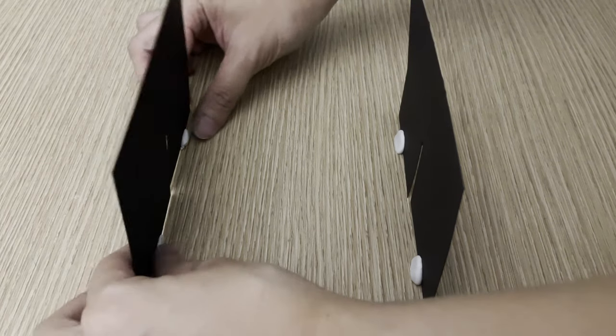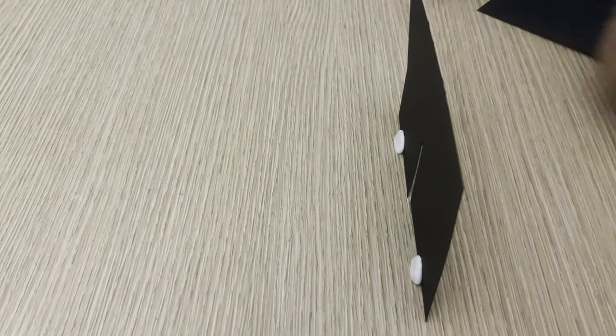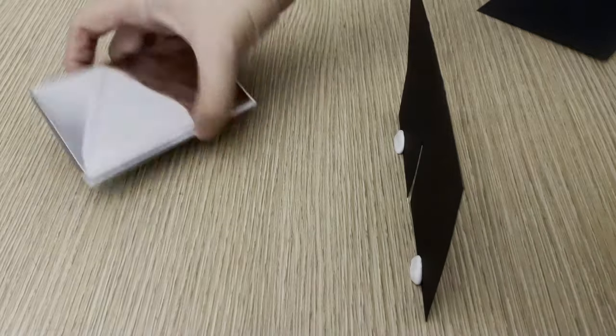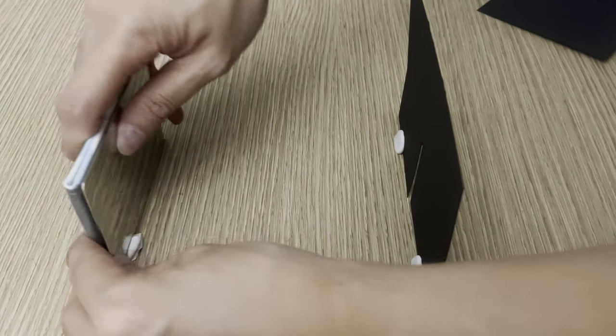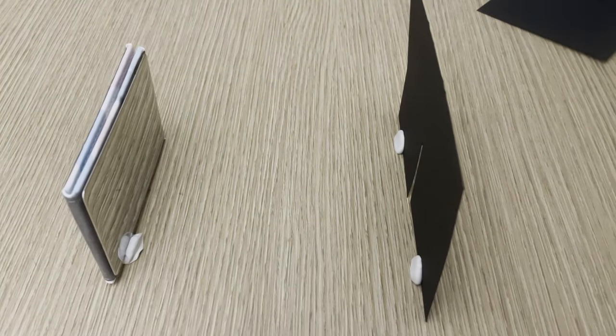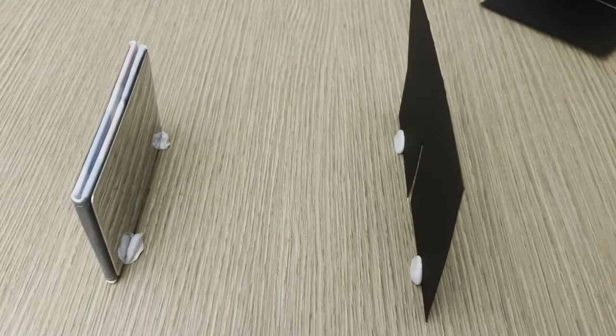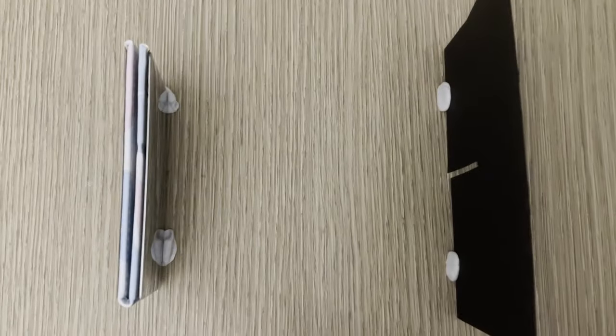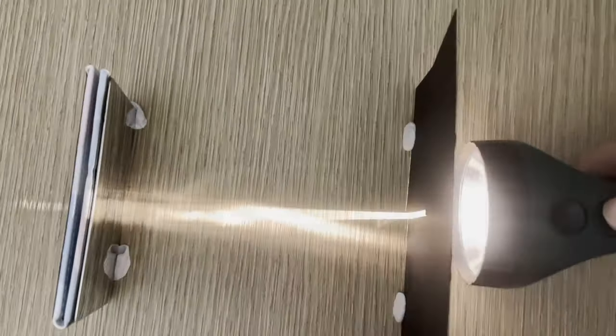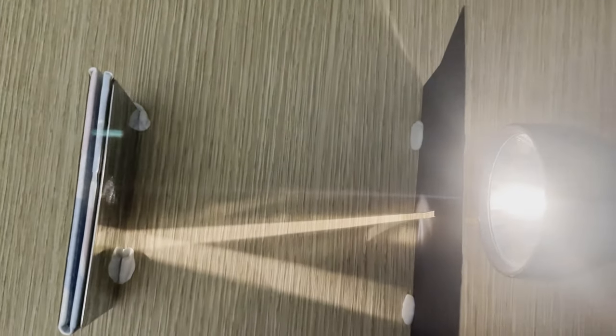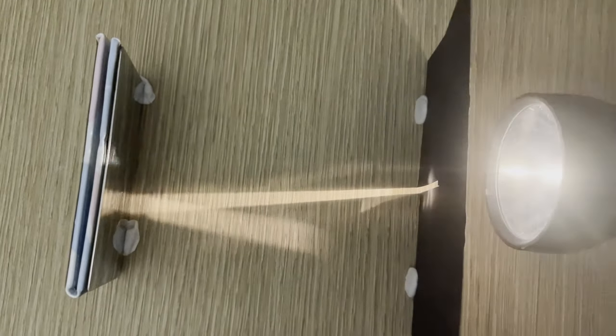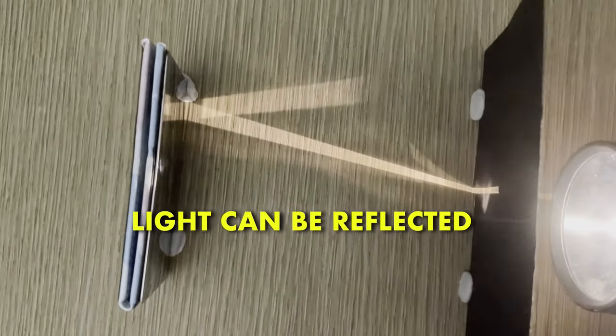Now let's prove the second property of light, that it bounces. Remove the piece of cardboard furthest from the flashlight and replace it with the small mirror. You can prop the mirror up with some blue tack. Now, do the same as before, and shine your light through the slit and toward the mirror. What do you see? Whoa! That's right! The light bounces at that angle, but remains moving in a straight line. This proves that light can be reflected.